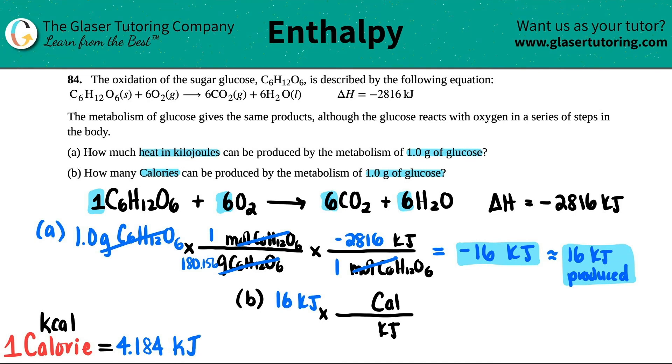And the number is for every one calorie, it's 4.184 kilojoules. Cancel out the kilojoules. And now we're going to say how many calories are going to be produced. So 16 divided by 4.184, two sig figs. So 3.8.